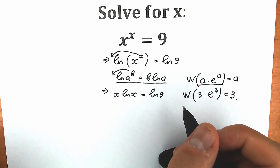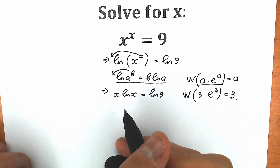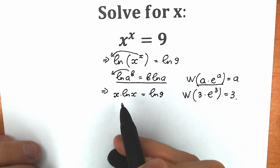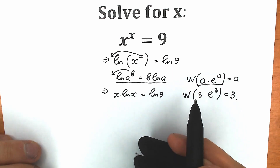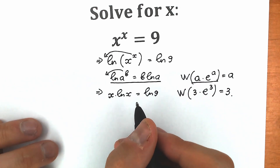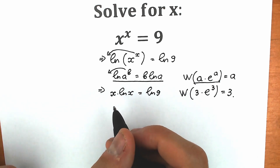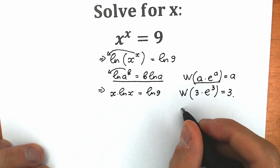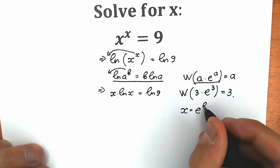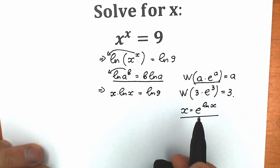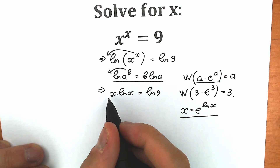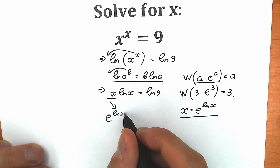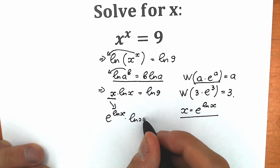Now let's try to create the right expression on the left side so we can apply Lambert W. We need to have e, and we need the same expression both as the coefficient and as the power of e. This x can be written as e to the power natural log x. So substituting, we have e to the power natural log x, times natural log x, equal to natural log 9.